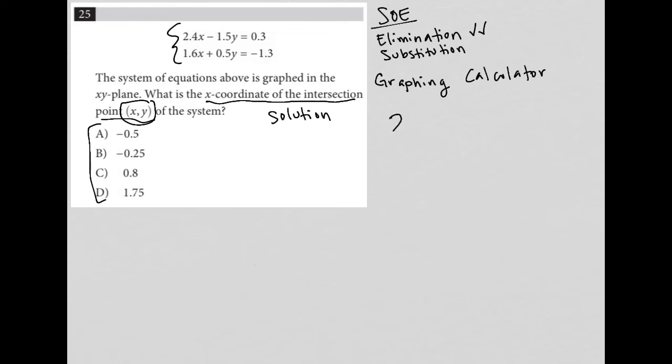So in essence, looking at this system of equations, 2.4X minus 1.5Y equals 0.3, and 1.6X plus 0.5Y equals negative 1.3. I just need to solve for X because we only want the X coordinate, which means I'm going to use elimination and I'm going to eliminate the Y value as my first step here.